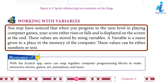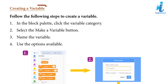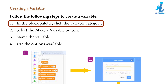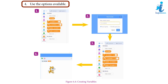Working with variables: You may have noticed that when you progress to the next level in a computer game, your score either rises or falls and is displayed on the screen. These values are stored using variables. A variable is a name given to a place in the memory of the computer; the values can be either numbers or text. To create a variable: one, click the Variable category in the block palette; two, select 'Make a Variable'; three, name the variable; four, use the options available.